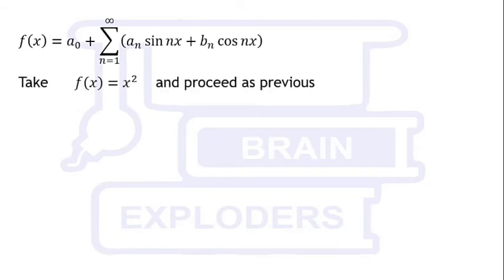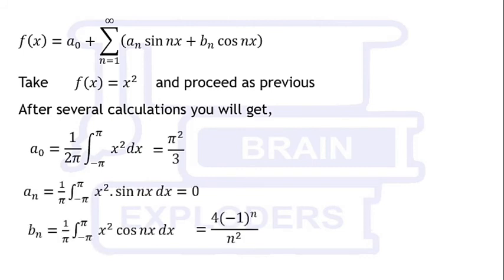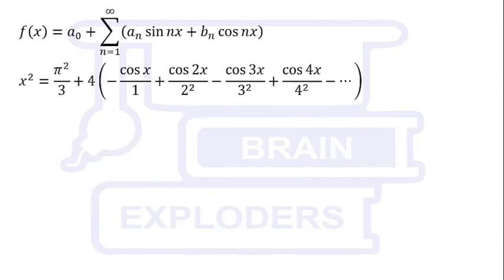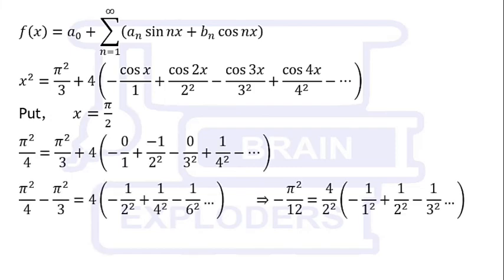For the second series, take f(x) = x². We get a₀ = π²/3, aₙ = 0, and bₙ = 4/n² times (-1)ⁿ. These values give us the expansion of x². On taking x = π/2, we get the value of our second series equals π²/12, and this was our solution.